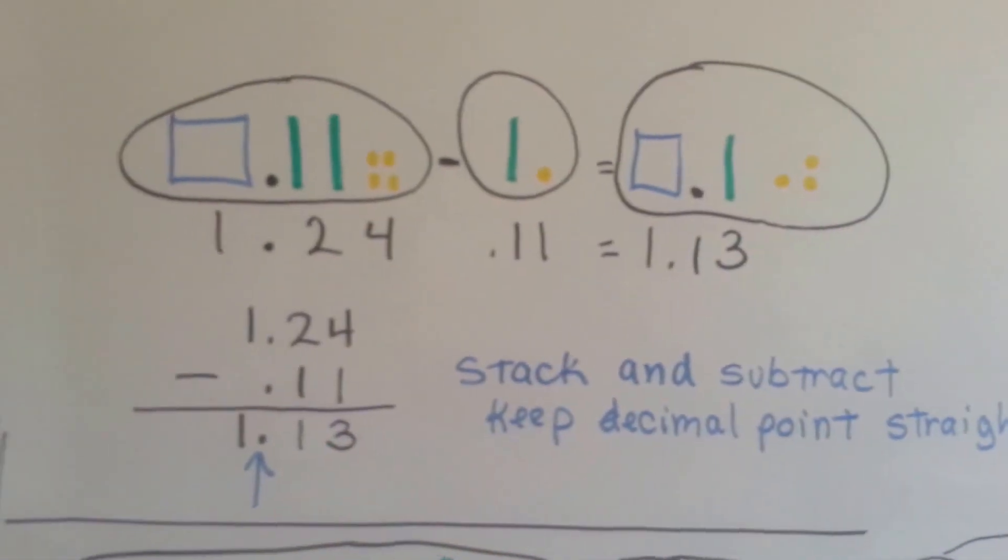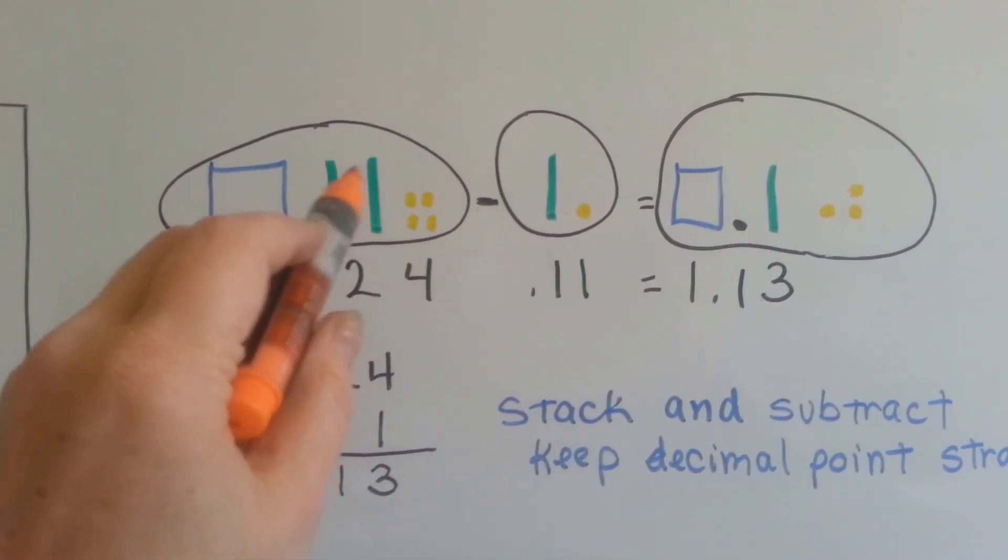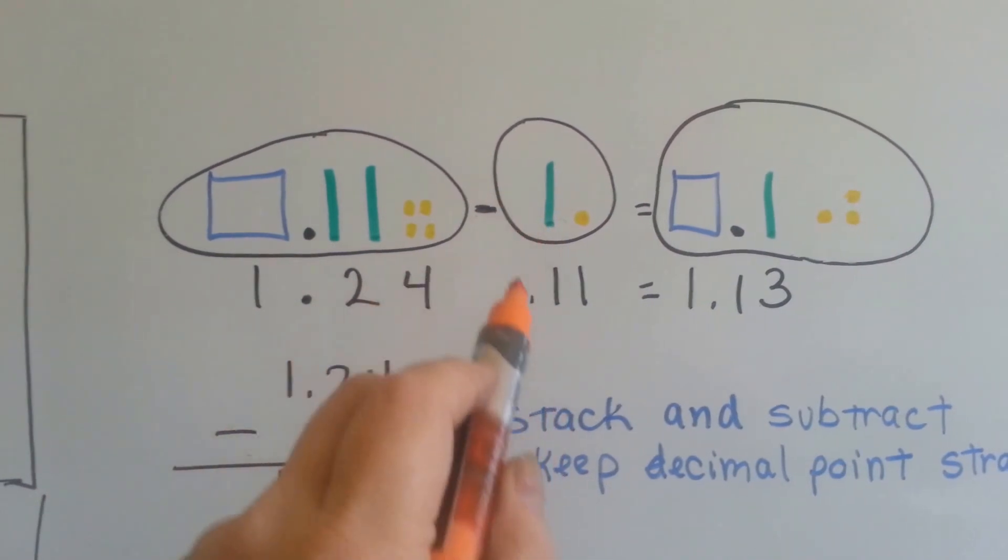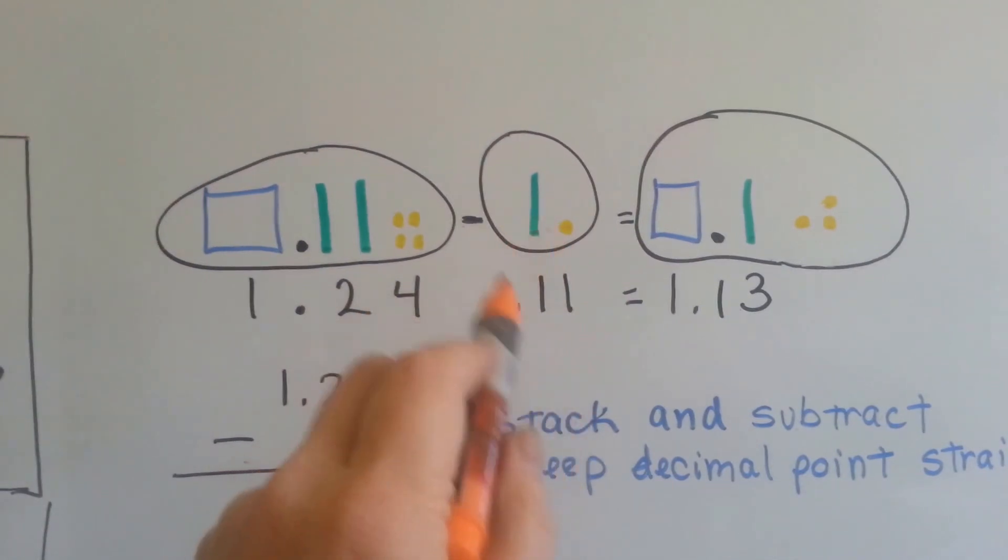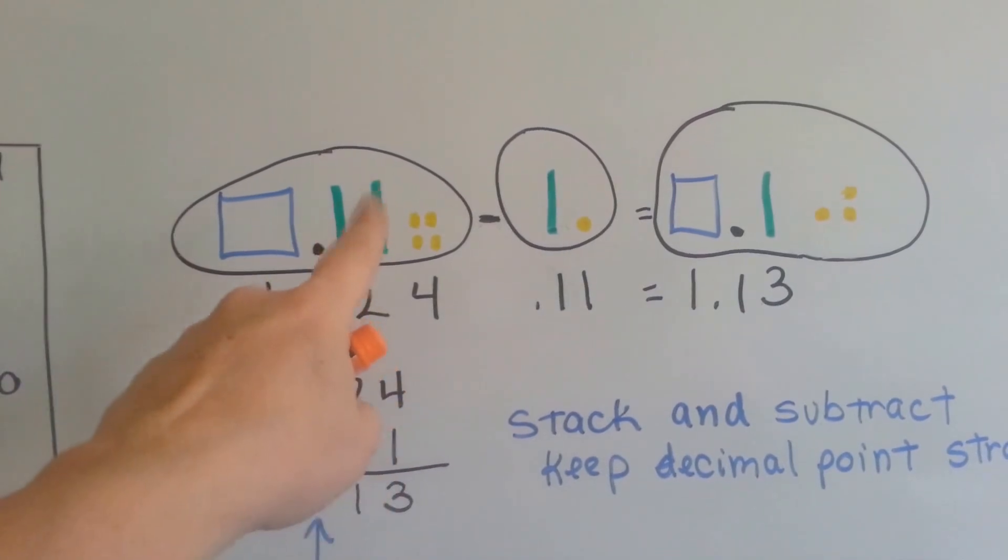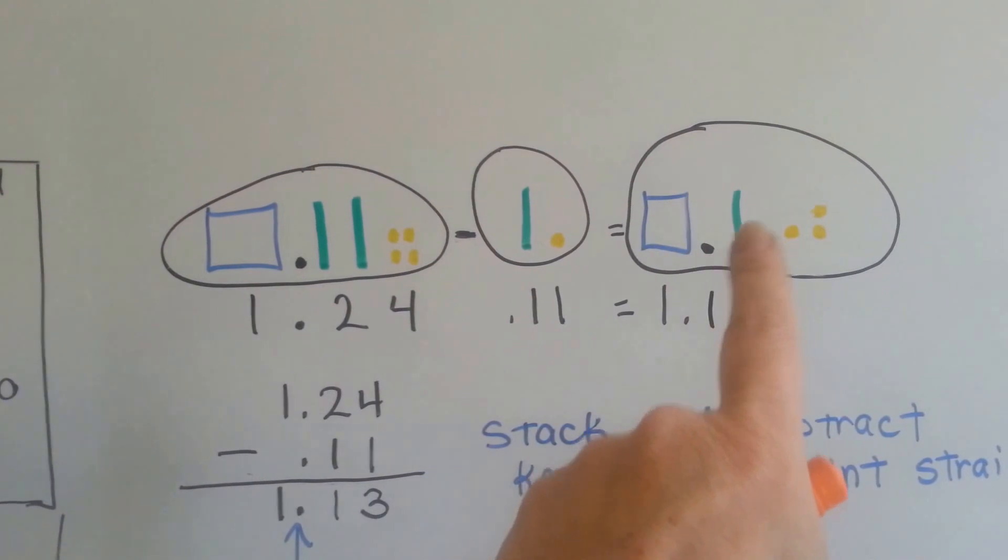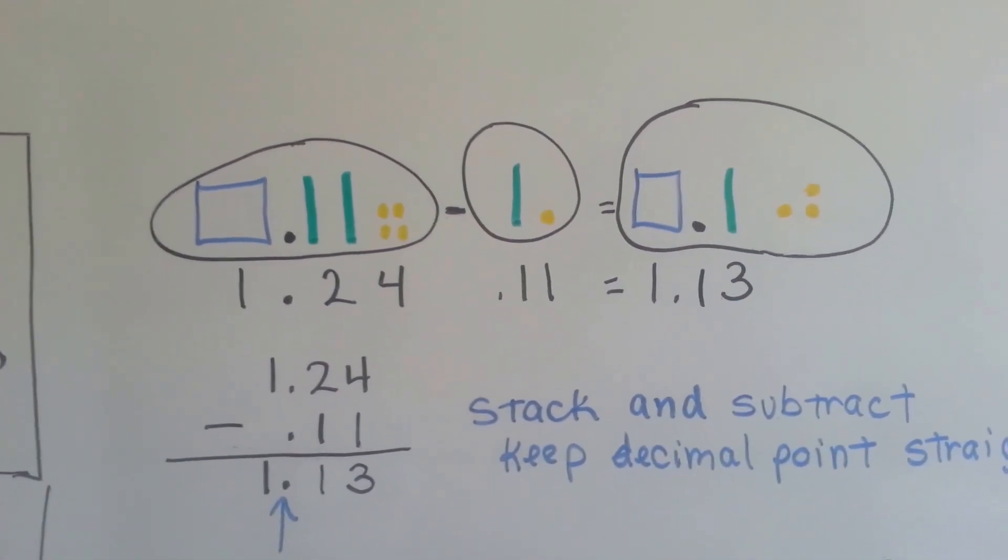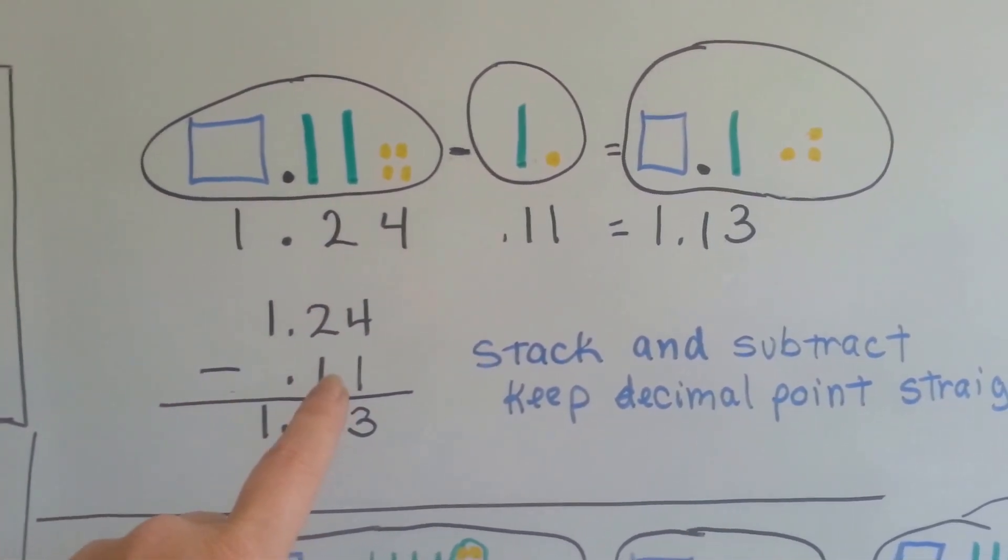So if we had one and twenty-four hundredths, which would be one full block, two tenths, and four hundredths, and we wanted to take one and eleven-hundredths away, that would be one green one and one little yellow guy, that means we would take away this green one and one little yellow one, and that would leave one and thirteen-hundredths left over.